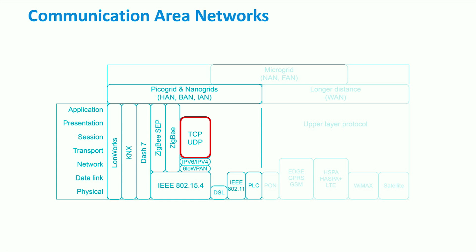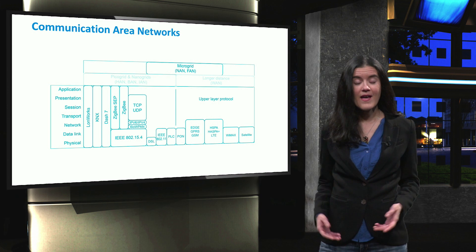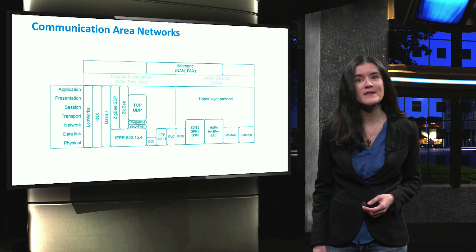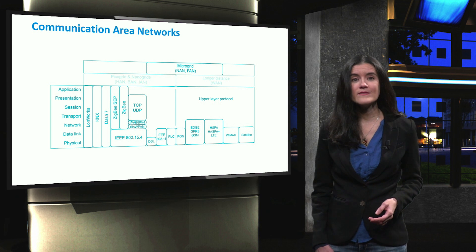At an upper layer, the near area network could be used for the communication inside a microgrid. At distribution level, a field area network can be found, which is responsible for the communication between the substations and the microgrid. These areas host standards for substation and automation, such as the IEC 61850.